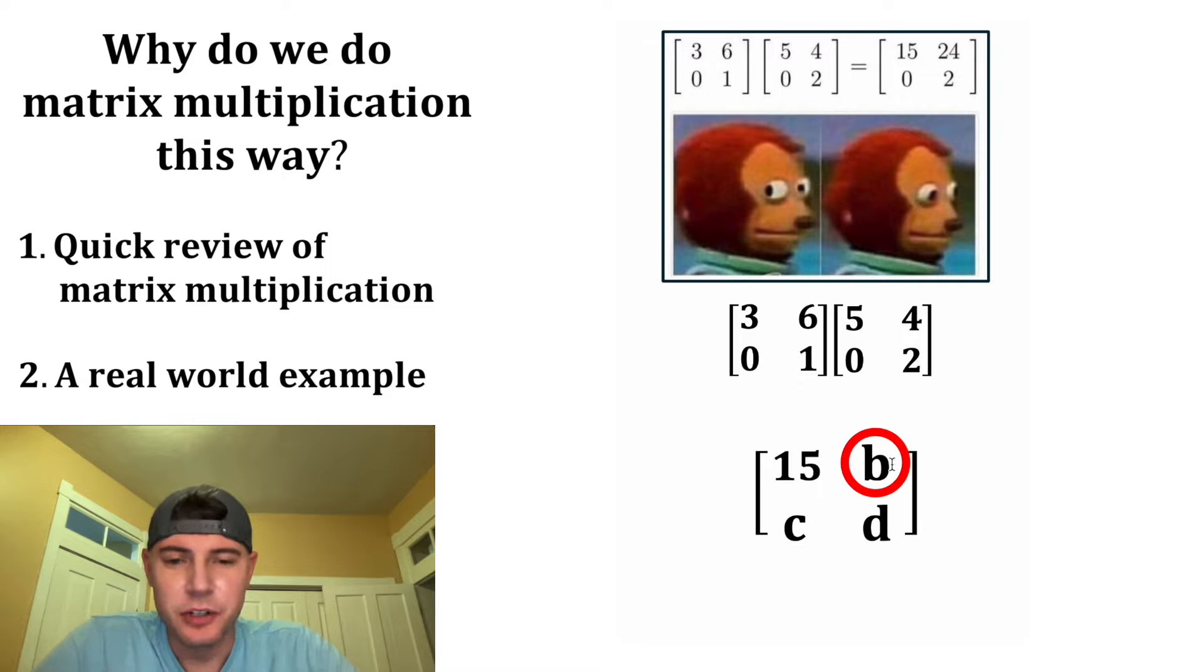And then we can do the same thing for the B. This is in the first row and the second column, so we're going to do first row of this one, second column of this one. And we're going to do three times four plus six times two.